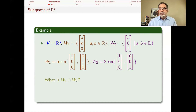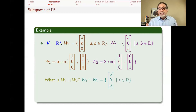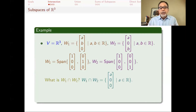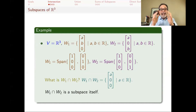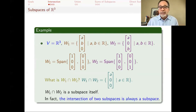What is their intersection? Those are all vectors of the form (A, 0, 0): to be in W1, the third coordinate must be 0; to be in W2, the second coordinate must be 0. To be in both, both second and third coordinates must be 0, but there's no restriction on the first. So W1 intersection W2 is spanned by (1,0,0) and is itself a subspace. In this case, if I want a subspace inside W1 intersection W2, I might as well take W1 intersection W2 itself. The intersection of two subspaces is always a subspace — that was the subject of a previous video.